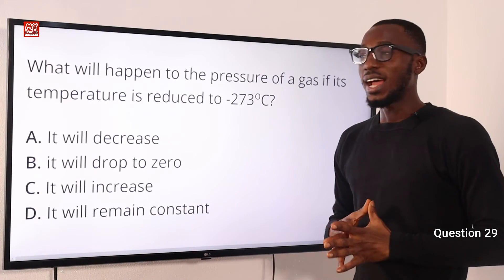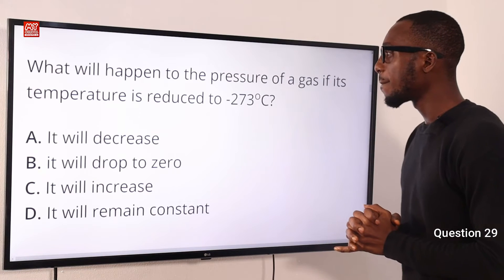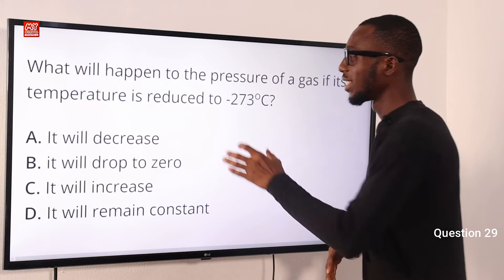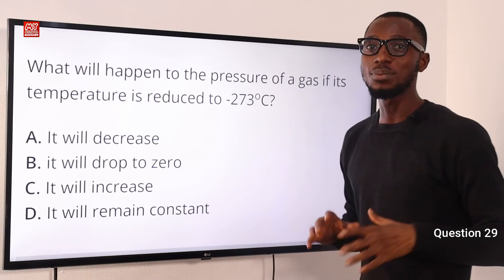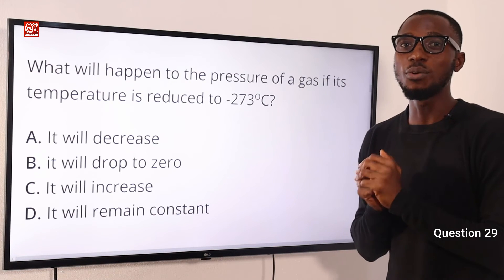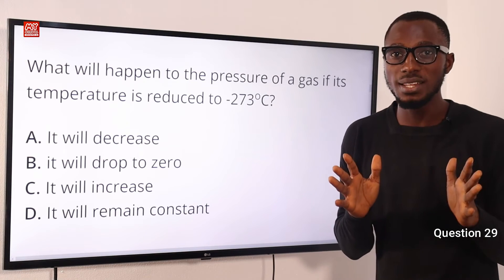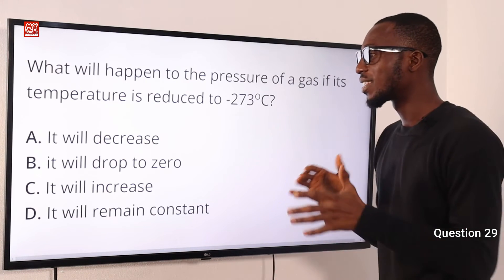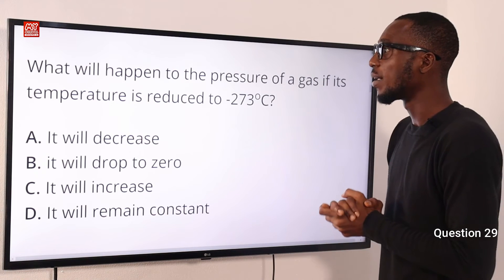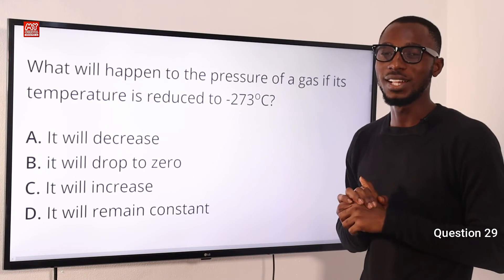Number 29. What will happen to the pressure of a gas if its temperature is reduced to minus 273 degrees Celsius? This is zero Kelvin or absolute temperature. At this absolute temperature, the pressure will be equal to zero — the gas particles have no movement, and there is no disorderliness observed. The correct option is option B: the pressure will drop to zero.